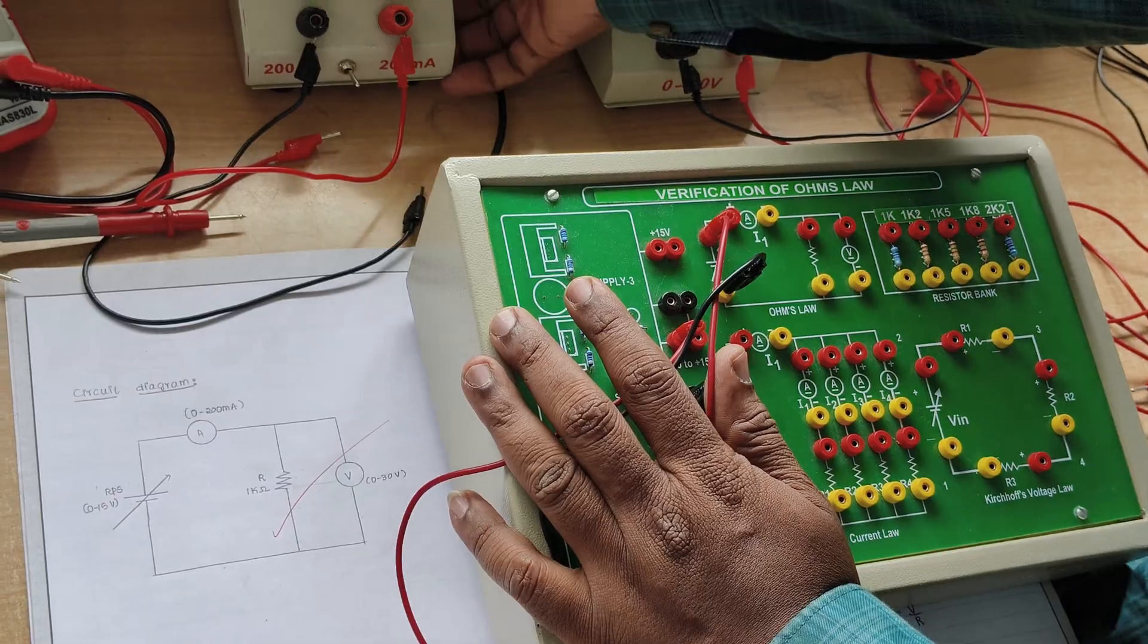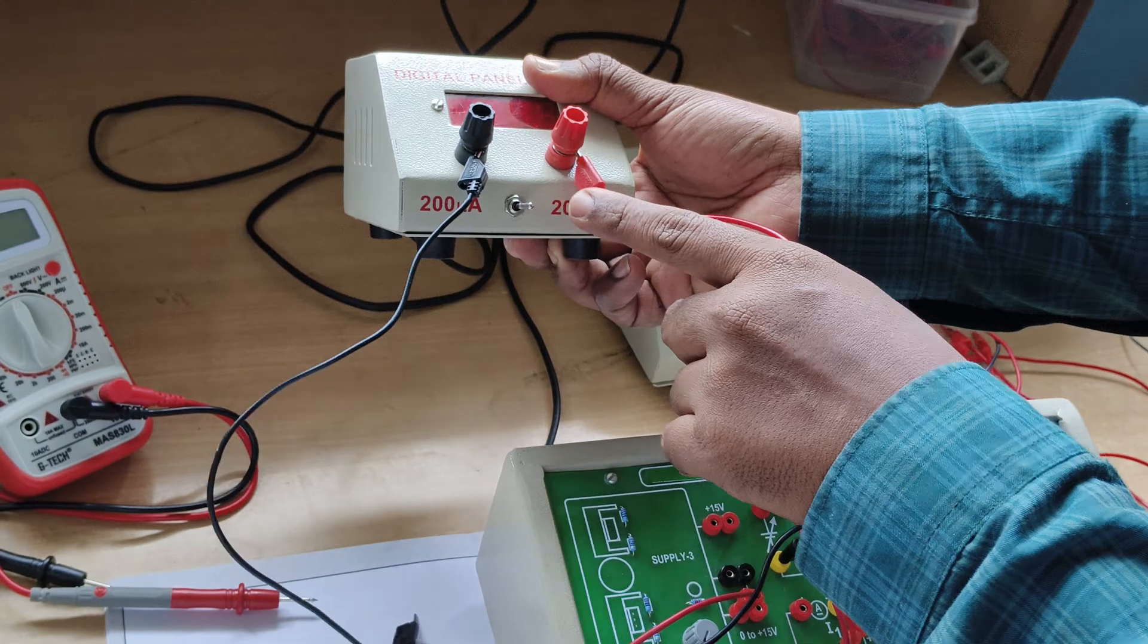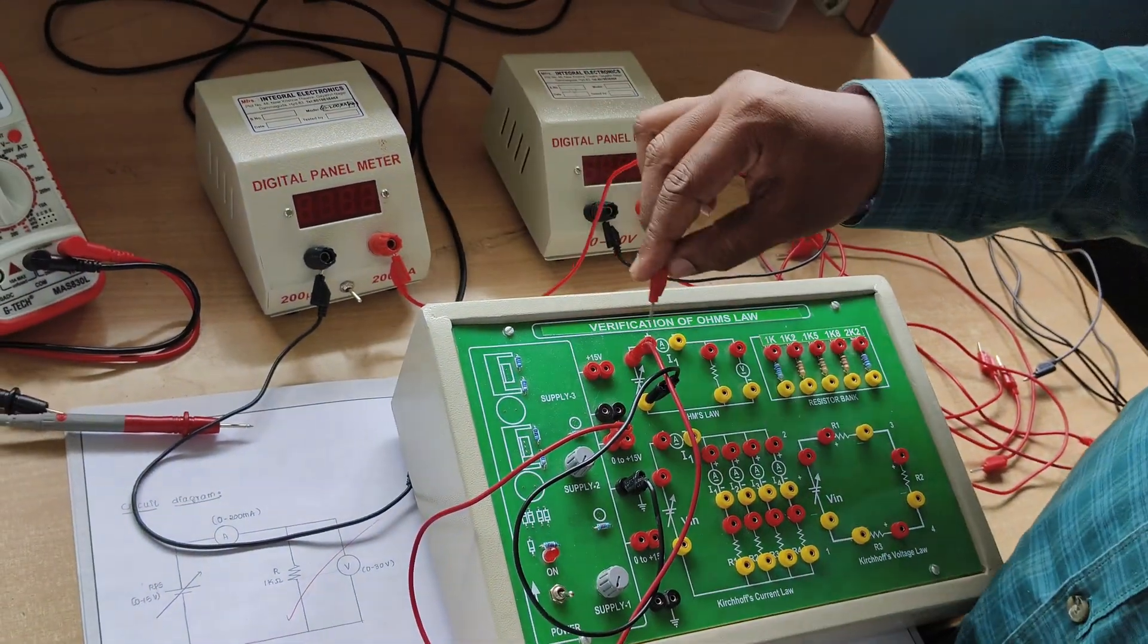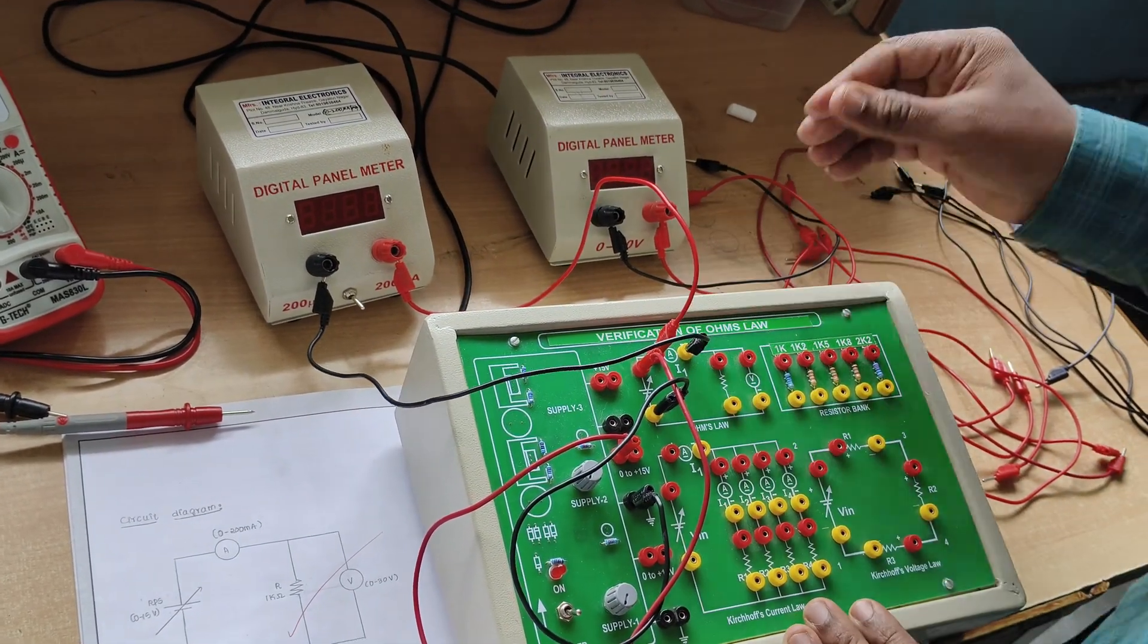This is an ammeter with a range of 0 to 200 milliamps. The ammeter positive should be connected to the positive side and negative to the negative side.